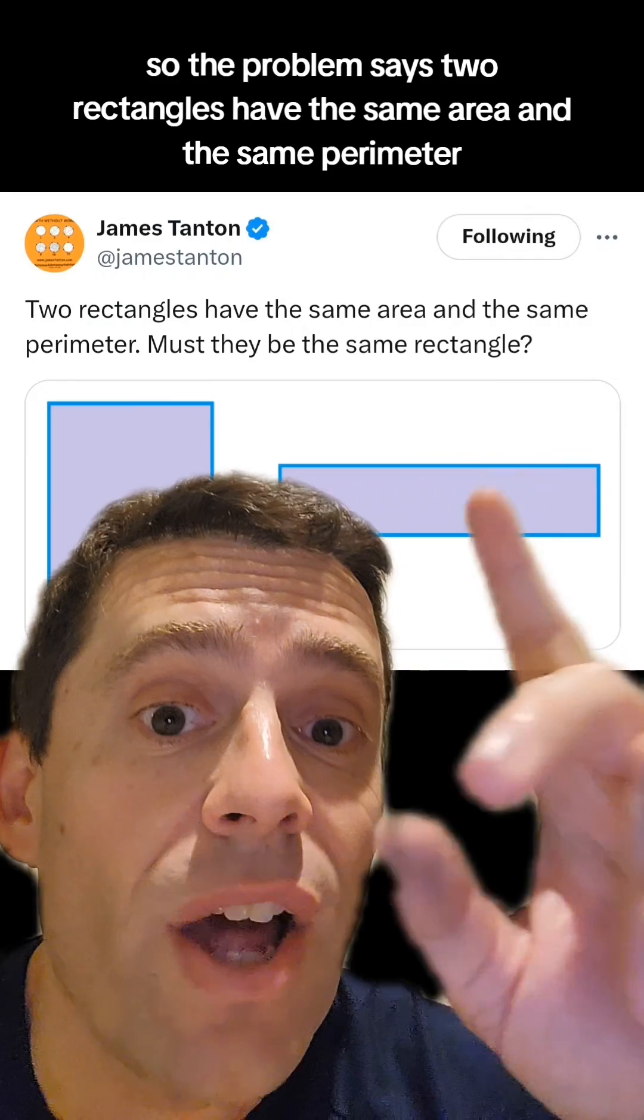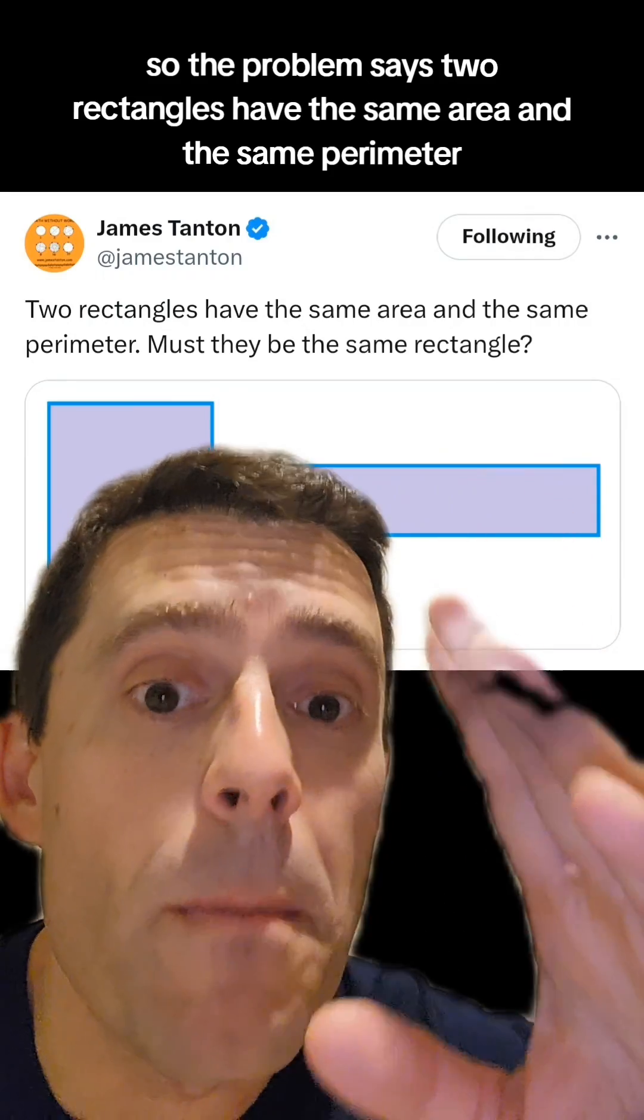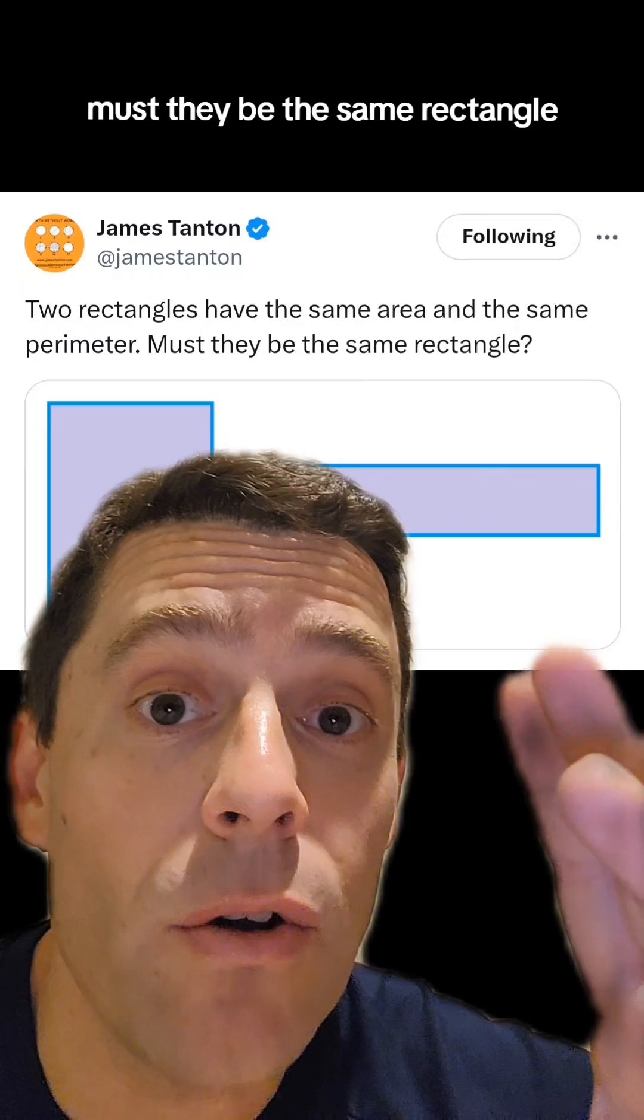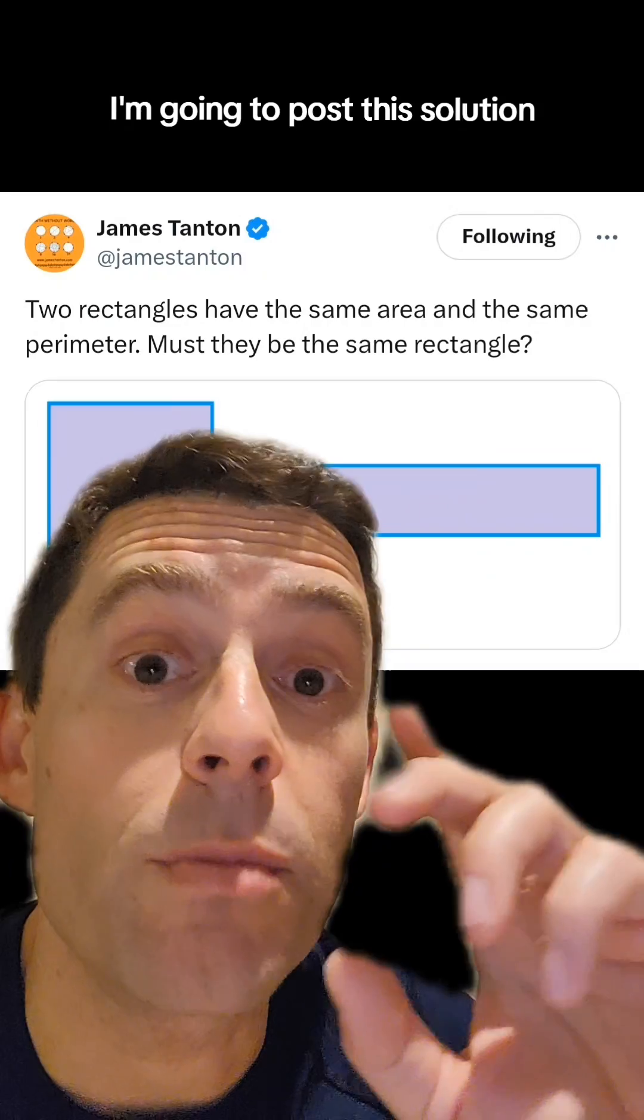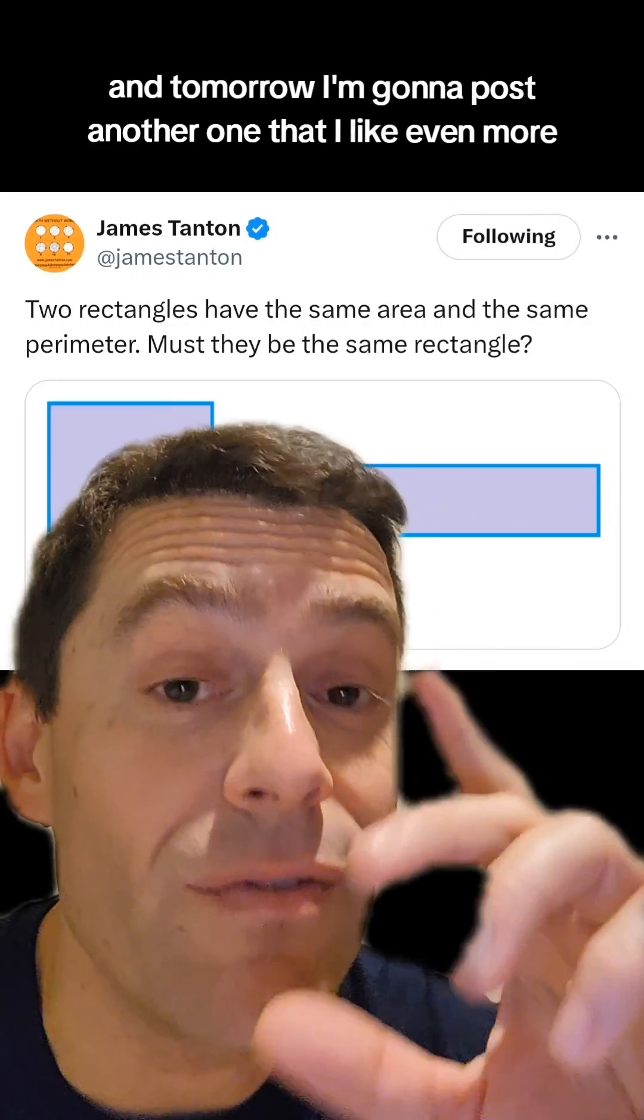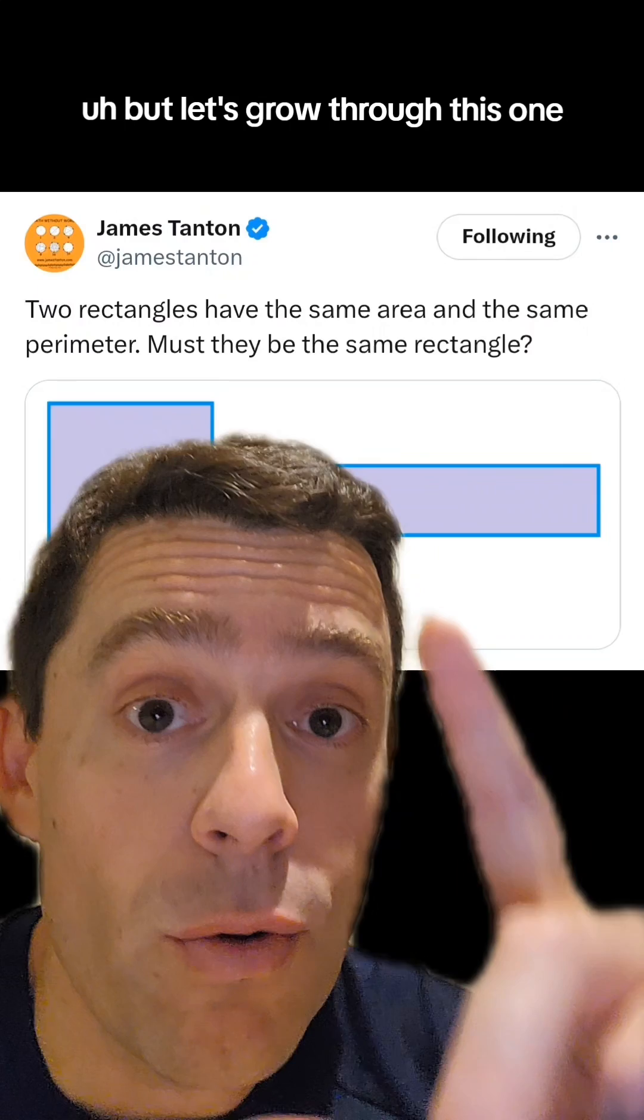So the problem says two rectangles have the same area and the same perimeter. Must they be the same rectangle? Let's find out using a little bit of algebra. I'm going to post this solution, and tomorrow I'm going to post another one that I like even more, but let's scroll through this one.